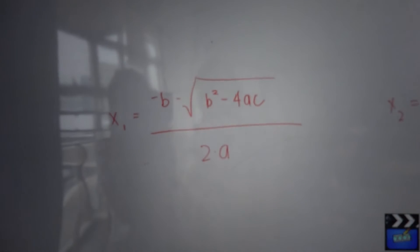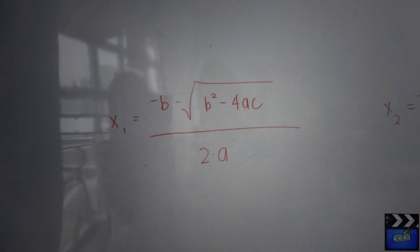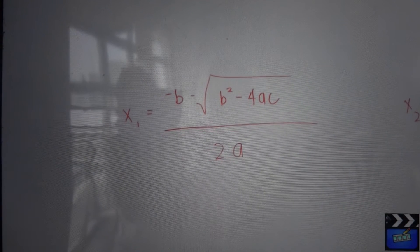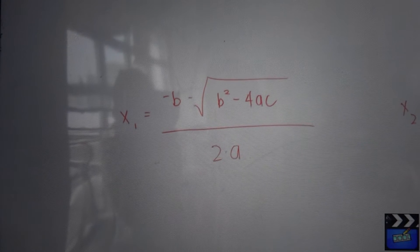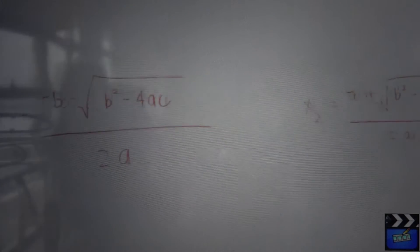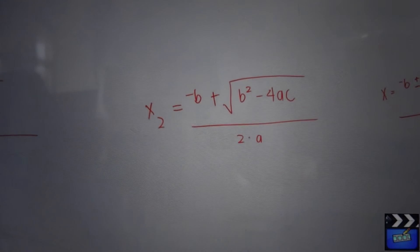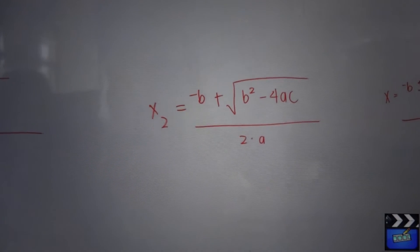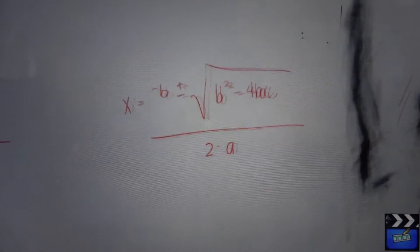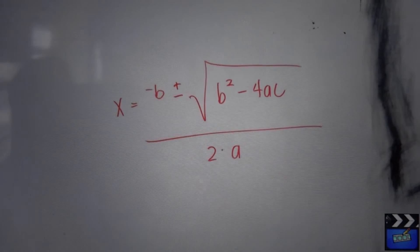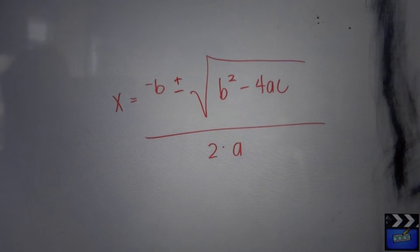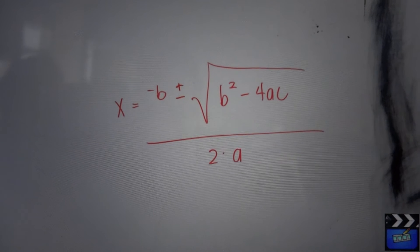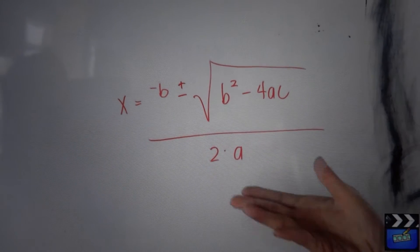The discriminant can be positive, zero, or negative. If the discriminant is positive, the quadratic equation has two different solutions, which are the roots. These two solutions are often written together using the quadratic formula with a plus-or-minus sign, meaning one solution uses a plus sign and the other uses a minus sign.